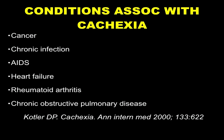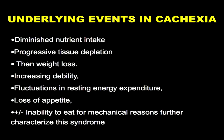What are the underlying events happening in a patient with cachexia? These patients have diminished nutrient intake, but they also have ongoing tissue depletion, which eventually leads to weight loss, increasing debility, and fluctuations in resting energy expenditure. They largely have loss of appetite, which may be due to underlying conditions, and they may not be able to eat for mechanical reasons like obstructing tumors preventing their intake.